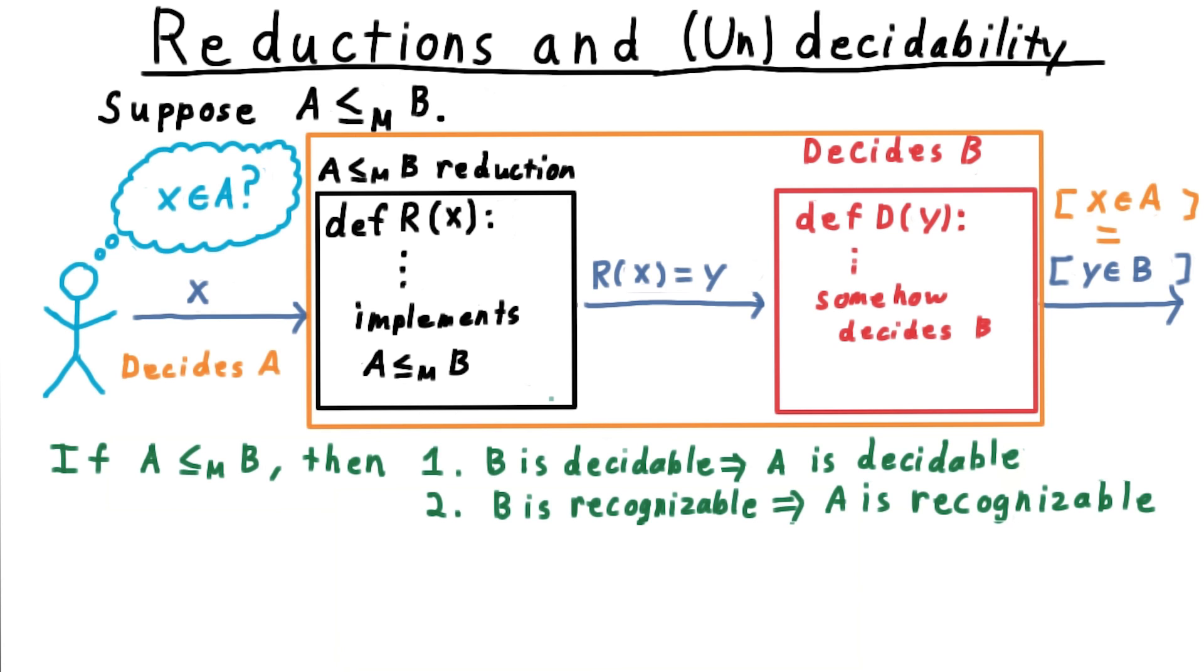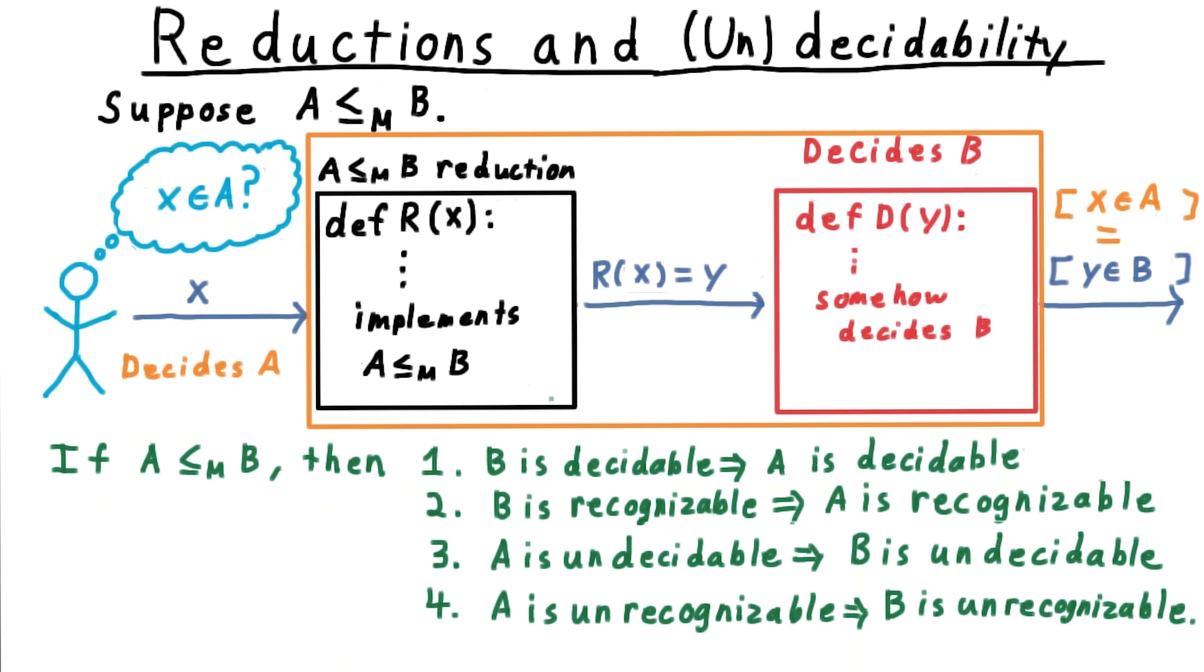It might loop, but we know it won't accept, and that's good enough for a recognizer for A. The other two consequences are just the contrapositives of these.